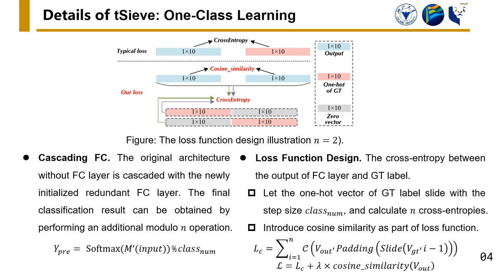Meanwhile, cosine similarity is introduced as part of the loss function to make each part of the redundant FC orthogonal to each other. This benefits the fact that when one part of the redundant FC is attacked, the projection of the perturbation on other parts could tend to zero, thus achieving robustness.